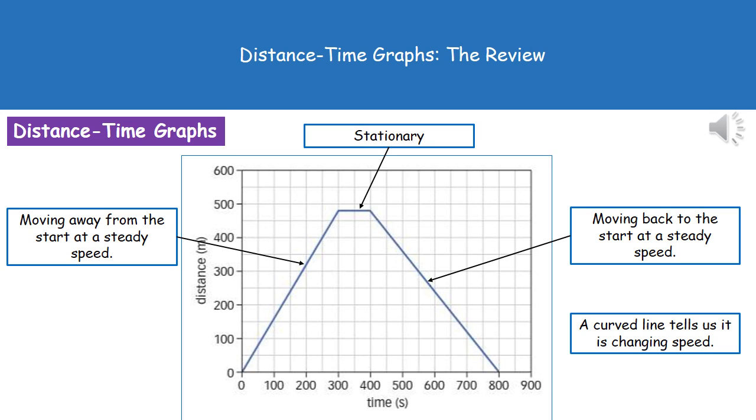What we can see in the first part of the graph is that as the time is increasing, the distance is also increasing at a uniform rate. We have that positive gradient there, and what that tells us on this distance-time graph is that our object is moving away from the start at a steady speed.